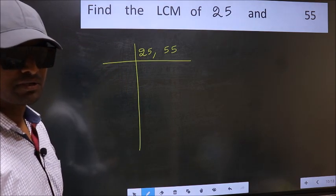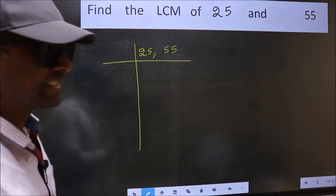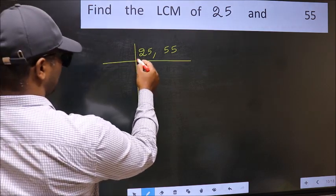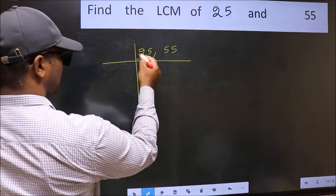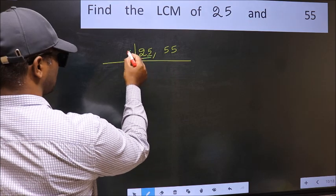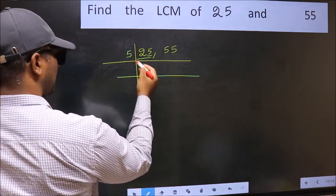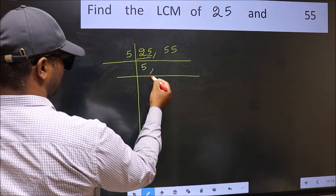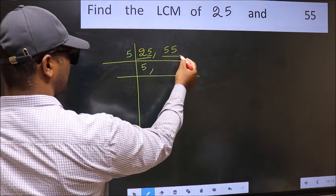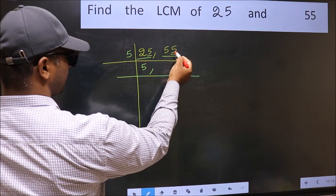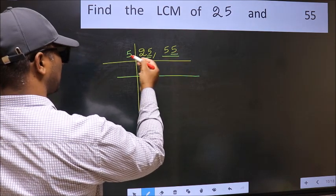Now focus on the first number, which is 25 here. In this number, last digit is 5, so take 5. When do we get 25 in the 5 table? 5 times 5 is 25. The other number, 55, last digit 5, so this is divisible by 5.